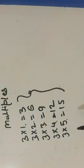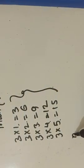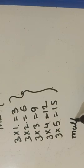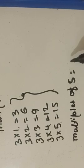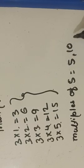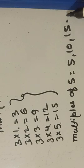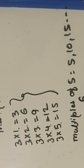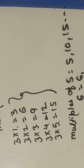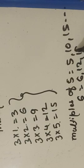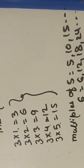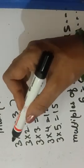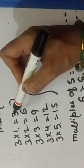Like that, multiples of 5 are: 5, 10, 15, and so on. Multiples of 6 are: 6, 12, 18, 24, and so on.